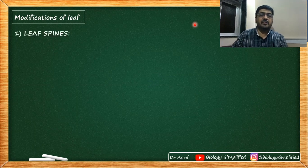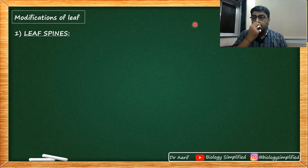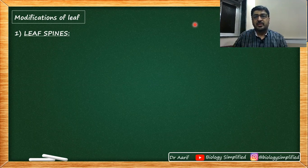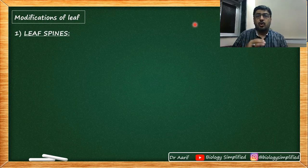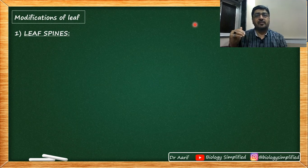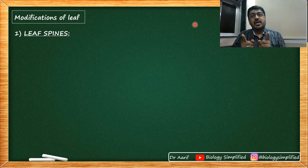The first modification we take is leaf spine. In the stem part last time we discussed about thorn. Now we have both thorn and spine in this chapter. Thorn is a modification of stem and spine is a modification of leaf. Now, how do we differentiate between the two?